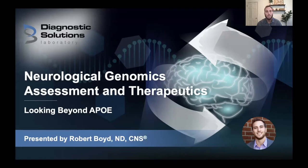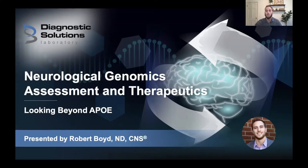Our topic today is neurological genomics and how to assess and apply therapies. Specifically, we're going to be looking beyond the APOE gene. APOE is the most common gene focused on when it comes to neurological health and assessment for Alzheimer's disease, and we're going to focus in on some other genes we can also pay attention to with our genomics.